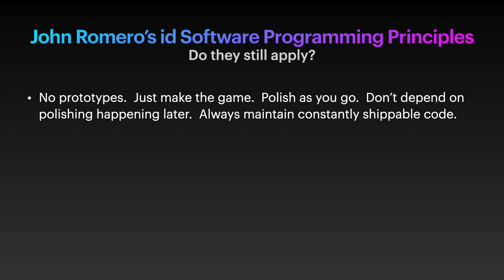The first is: no prototypes, just make the game, polish as you go, don't depend on polish happening later, always maintain constantly shippable code. I agree with the polish as you go and always maintain constantly shippable code. In any type of software development, one of the things that will really irritate your team is if you check in broken code in the TFS, Git, or whatever software repository you're using. These errors you checked in will prevent the rest of the team from being able to build when they get latest. As far as the no prototypes just make the game, I have mixed feelings on that one. One game I created turned out to be boring, and if I would have known that early on I would have cancelled the game and made something else. The flip side is creating a working prototype can take a lot of effort, but it's still less than creating the full game.